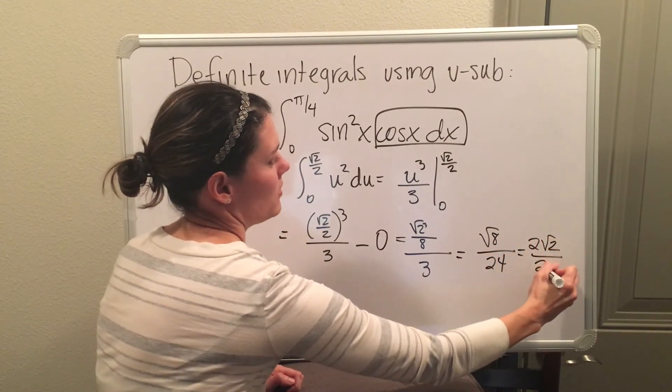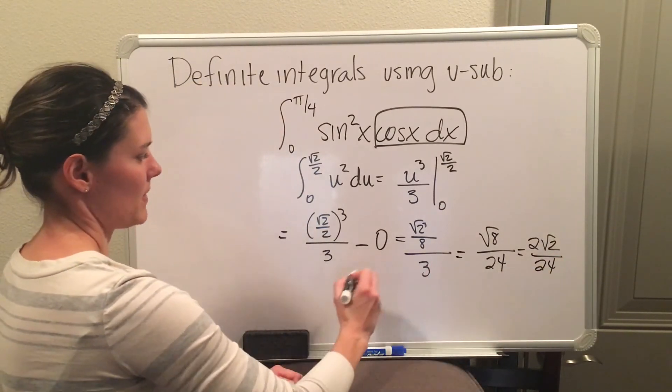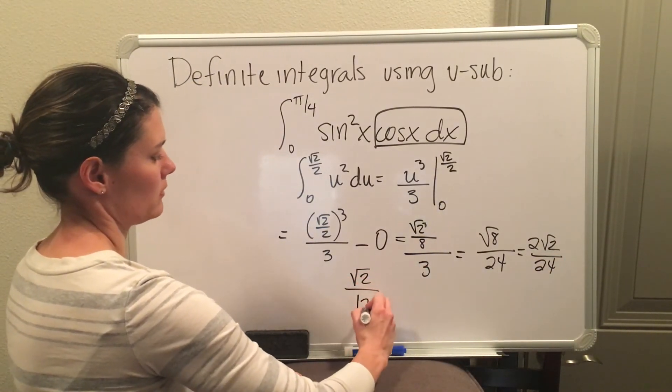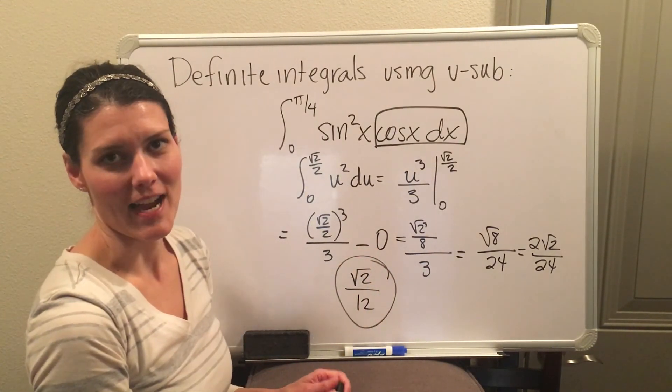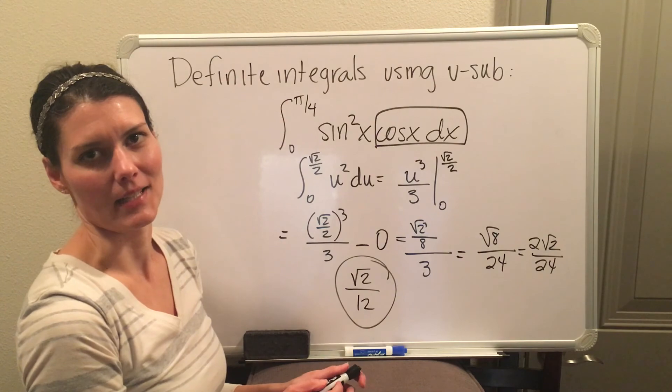So I'm just reducing the number a little bit. And my final answer will be square root of 2 over 12. See you next time.